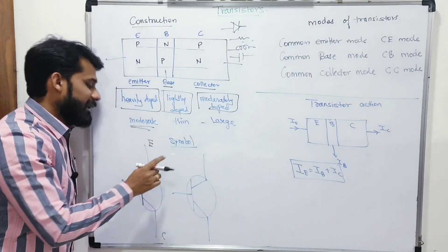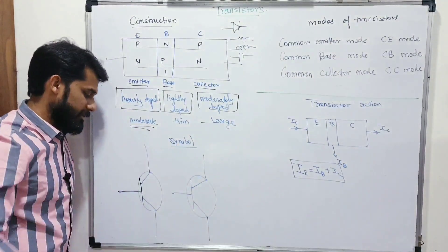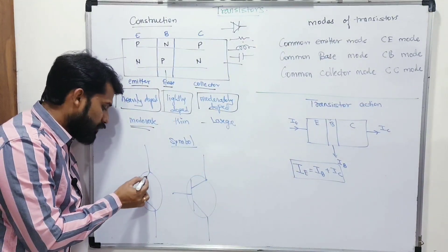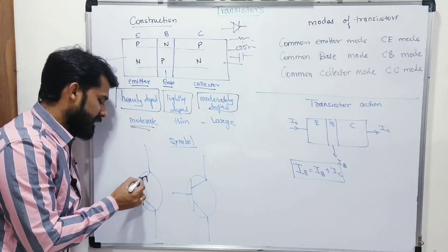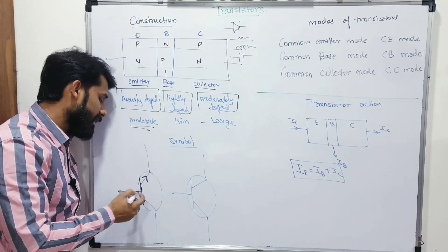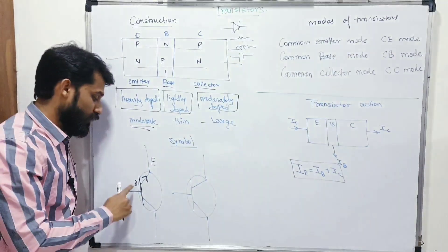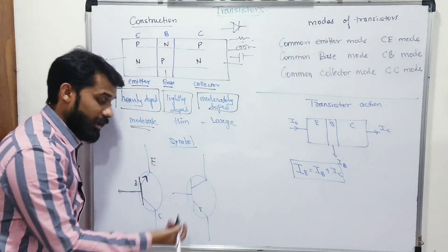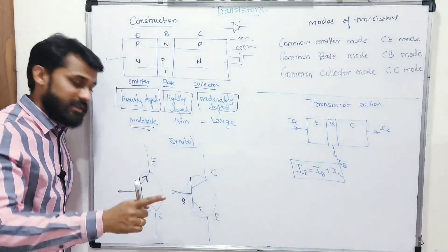You don't need to write emitter, base, collector on the symbol because the arrow will tell you which is which. The line in the middle is always the base. The arrow is always shown between the base-emitter junction. Whichever line has the arrow on it automatically becomes the emitter, and the remaining line becomes the collector.